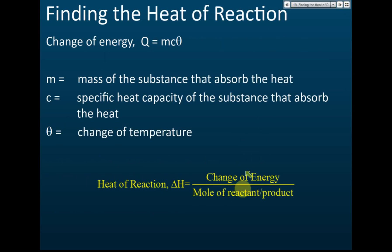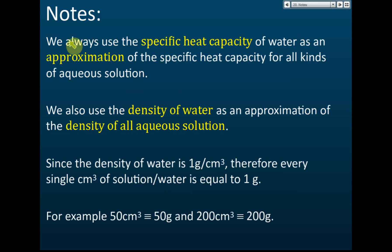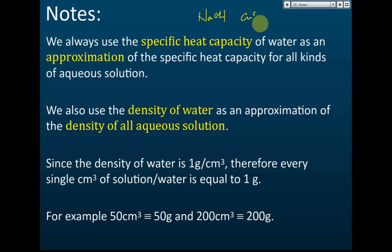When using this formula to find heat of reactions, there are a few things to know. First, we always use the specific heat capacity of water as an approximation for the specific heat capacity of all aqueous solutions. In chemical reactions, the solutions used may be an acid, alkali, or salt — for example, sodium hydroxide or copper sulfate solution. All of these are aqueous solutions.